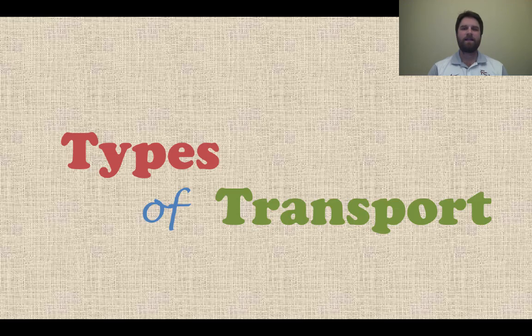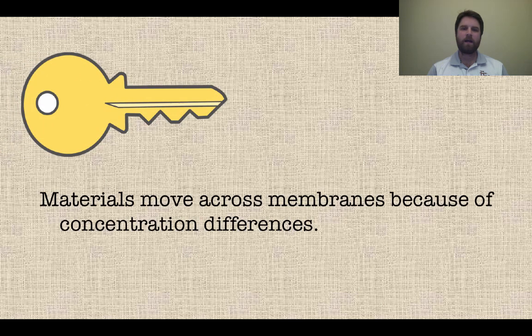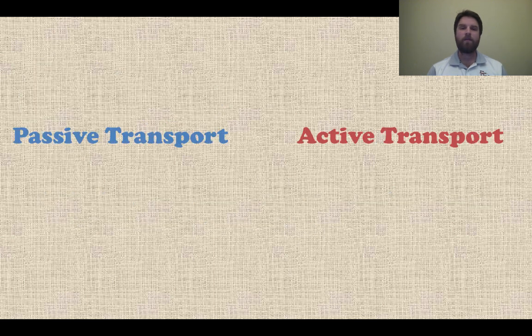Hey, it's Mr. Veve, and this lesson is on types of transport in the cell. So let's talk about our first key concept here, which is materials move across membranes because of concentration differences. Today we're going to talk about passive and active transport, what those are, and examples of each one.